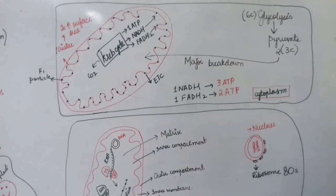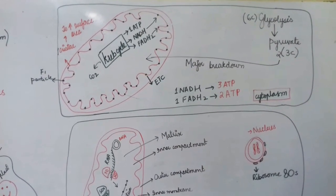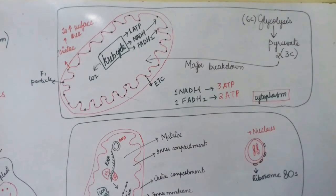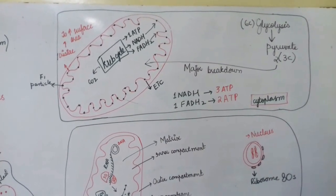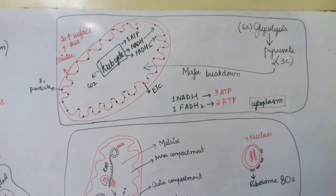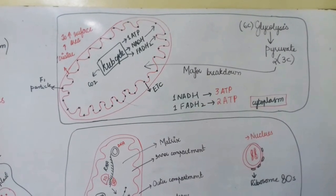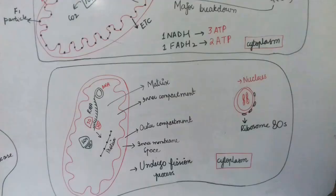In the matrix, oxidative enzymes are present, different salts, water, DNA, and RNA. These all basically help in the Krebs cycle steps for the formation of ATP.